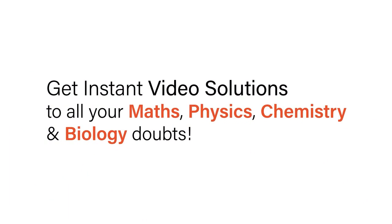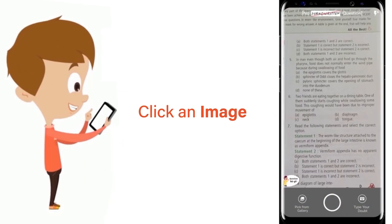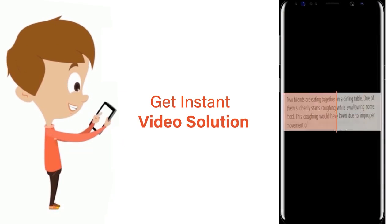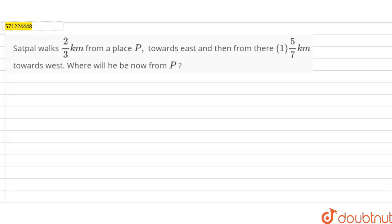With Doubtnet, get instant video solutions to all your math, physics, chemistry, and biology doubts. Just click the image of the question, crop the question, and get instant video solution. Download Doubtnet app today. Hi students, the question is: Satpal walks 2/3 kilometer from a place P towards east...